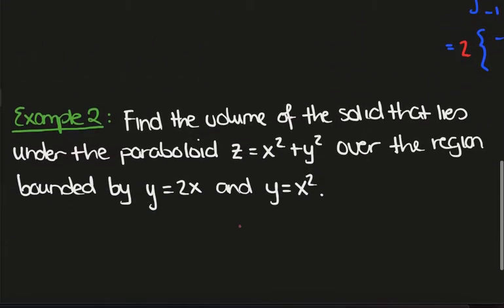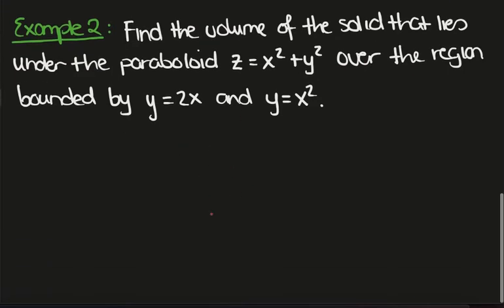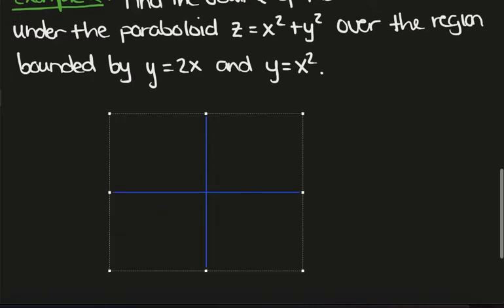So find the volume of the solid that lies under the paraboloid z equals x squared plus y squared over the region bounded by y equals 2x and y equals x squared. Let's do the same thing. We always sketch the region of integration first. So let's do that again.